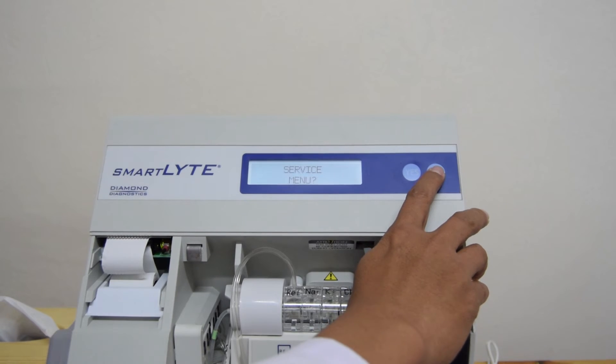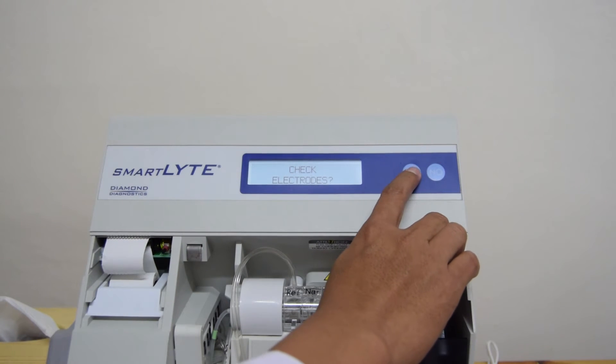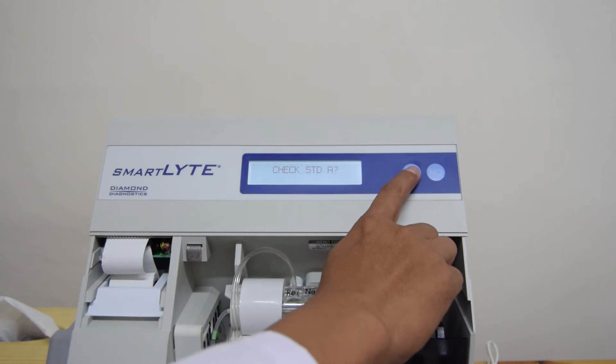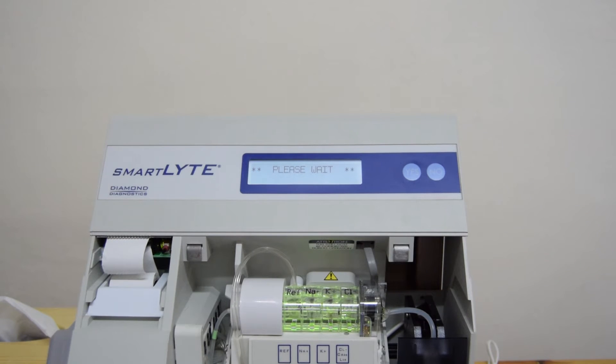Service menu, yes. Check elektroder, yes. Check standar A, yes. Standar A sudah selesai dan nilainya keluar. Nilai-nilai ini, nilai standar A, B, atau C itu ada pada user manual untuk membandingkan angka-angka ini sudah benar atau belum.